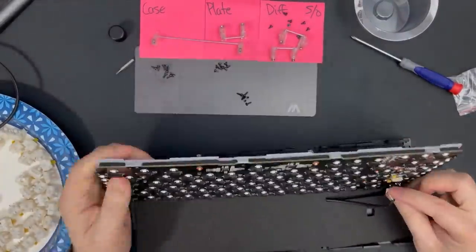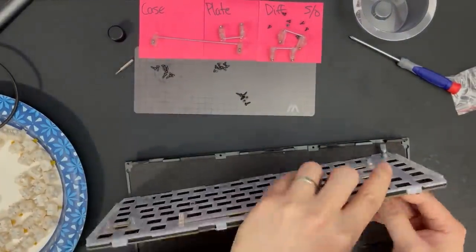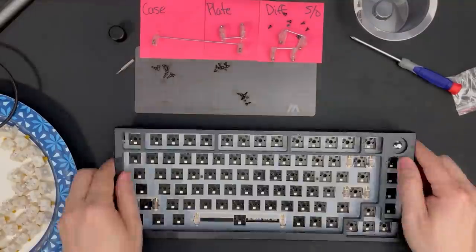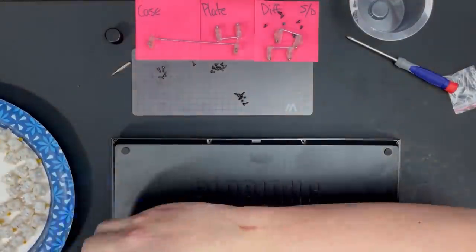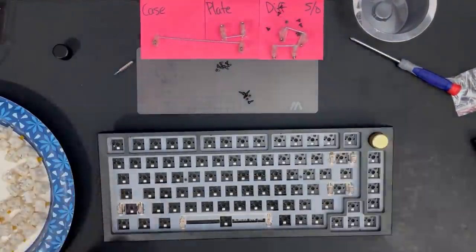Now, let's reconnect the daughterboard. Make sure to stuff the cable into its channel before closing up the case and retightening the case screws. For a final touch, I also picked up the gold knob, so let's swap that out too.